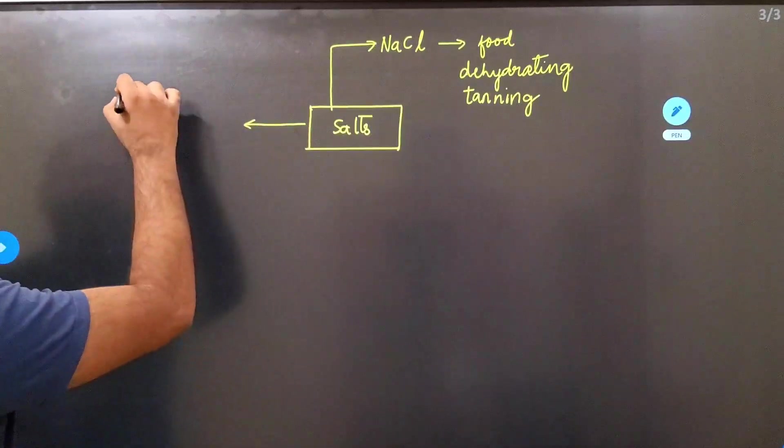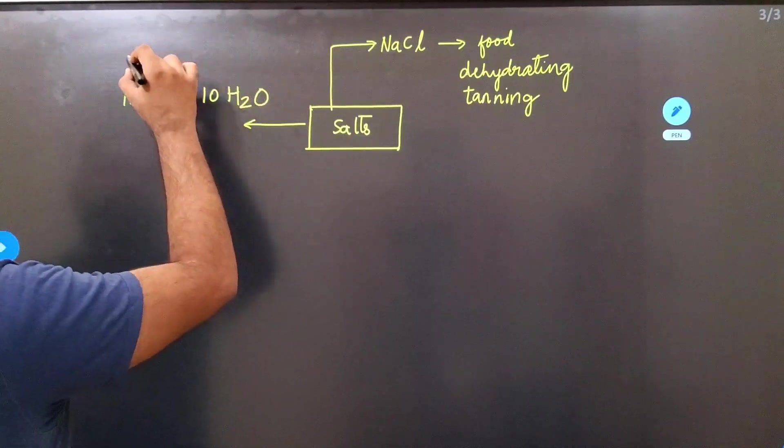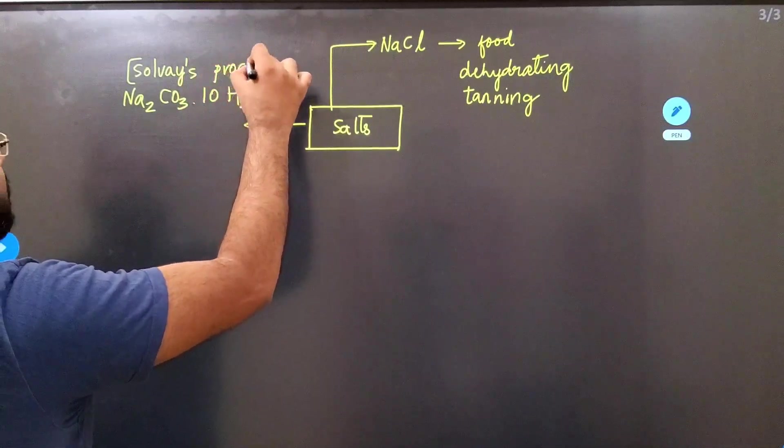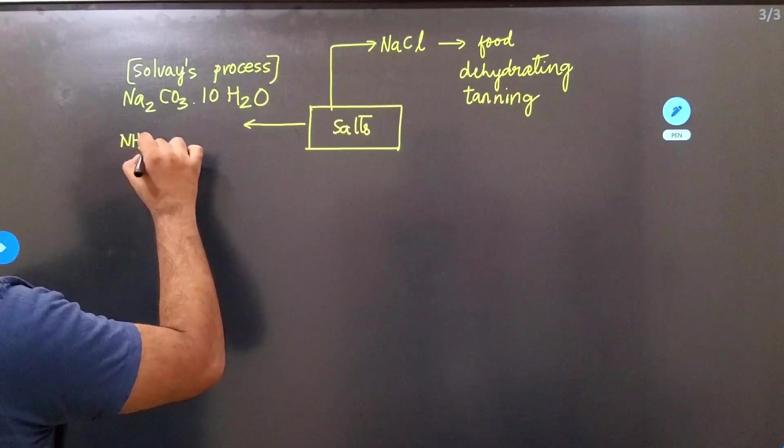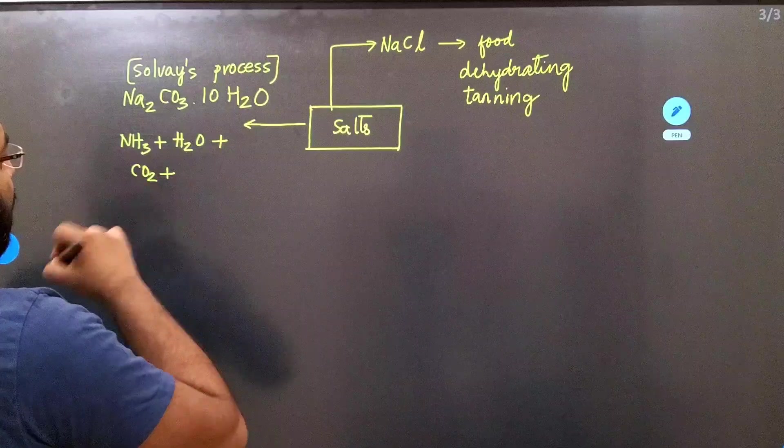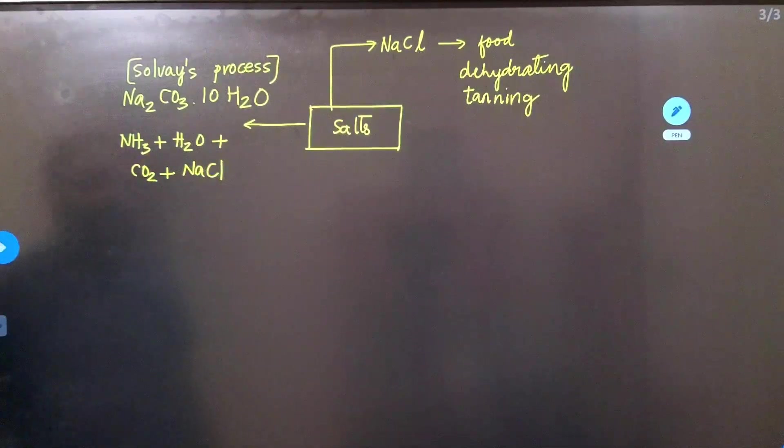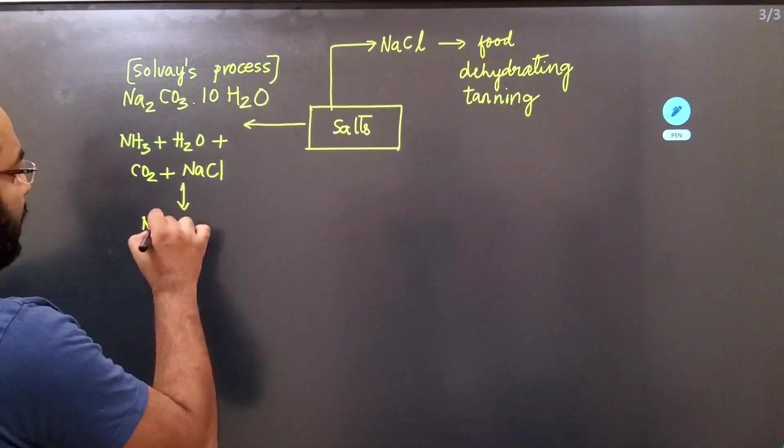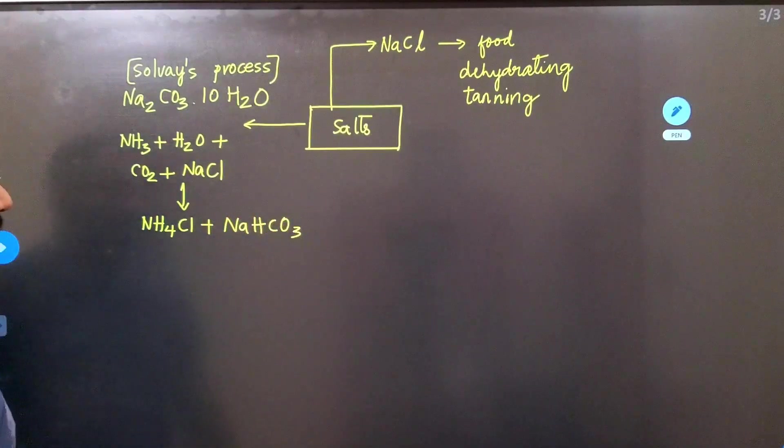Then let's look at the other salts that we have. The other salt that we have is washing soda, which is Na2CO3·10H2O. It is prepared by a process called Solvay process. And what goes into Solvay process? Multiple things go into Solvay process. You have ammonia, you have water, you have carbon dioxide, and then apart from this you also have sodium chloride. When you mix all of this together, you are going to get two products in the first step: ammonium chloride plus NaHCO3.